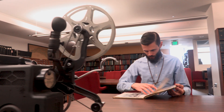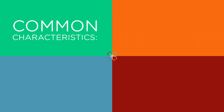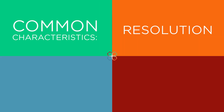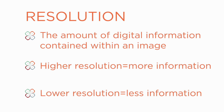When scanning printed items, you have options regarding the files you create. Some of the most common characteristics to adjust are resolution, color space, and file type. Let's start by talking about resolution. The word resolution refers to the amount of digital information contained within an image. Higher resolution means more information; lower resolution means less information.